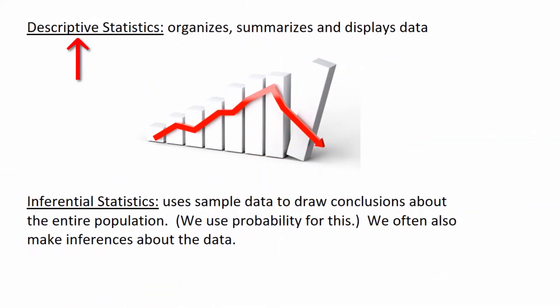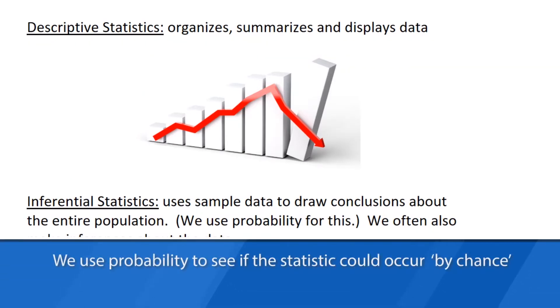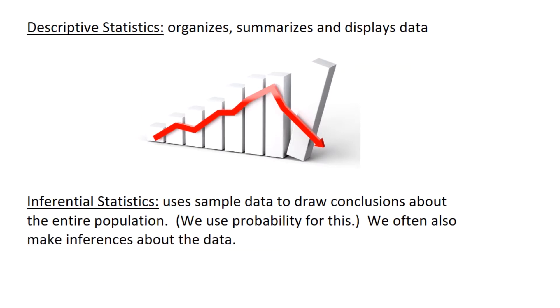Descriptive statistics organizes, summarizes, and displays data — as in the chart you see there. Inferential statistics uses sample data to draw conclusions about the whole population, and we use probability to compare our sample to chance. We also very often make inferences from our sample data.